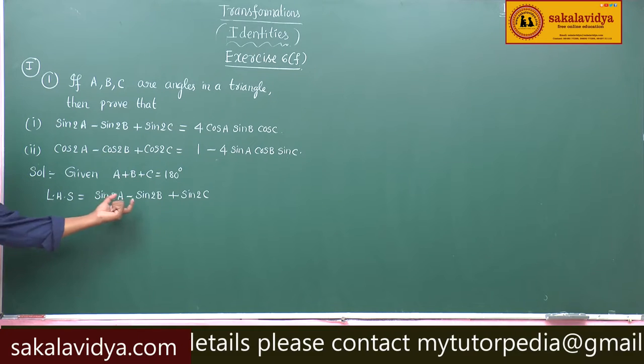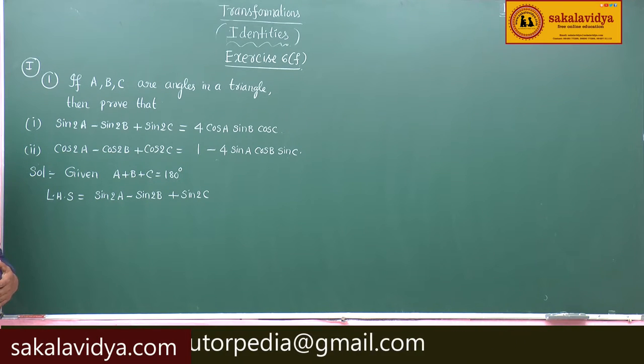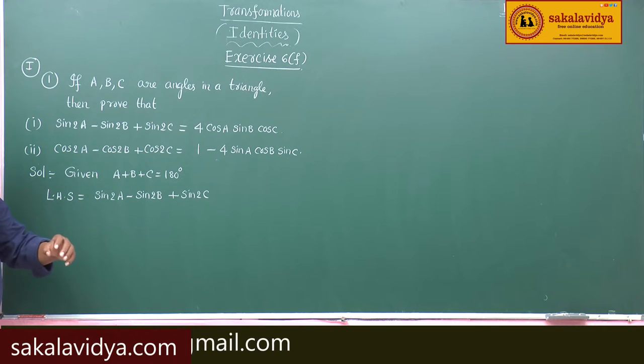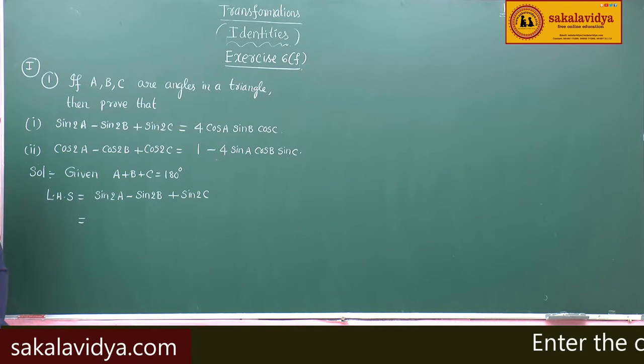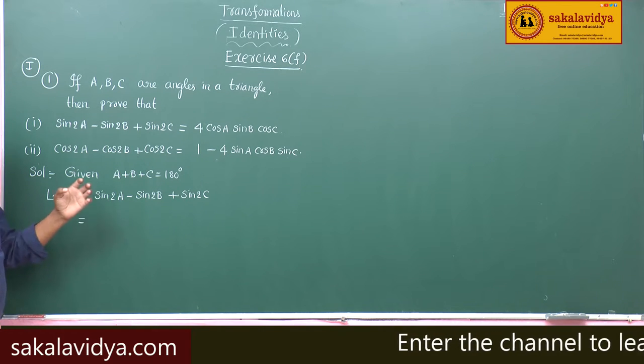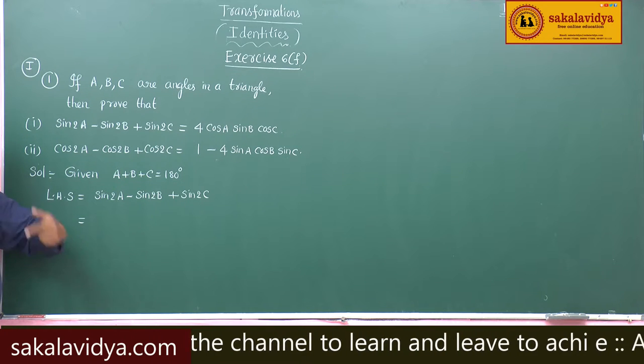Just observe the first two terms sin C minus sin D. What is sin C minus sin D? 2 cos of C plus D by 2 sin of C minus D by 2.